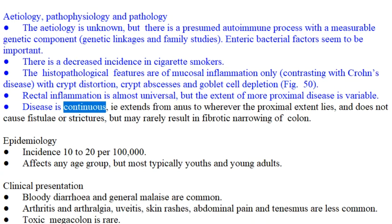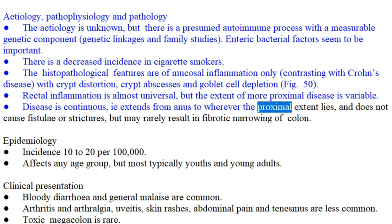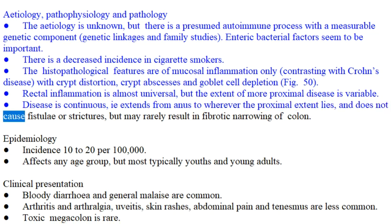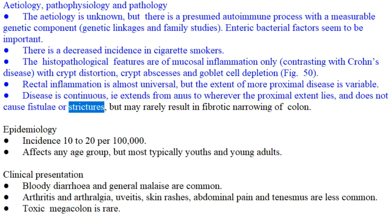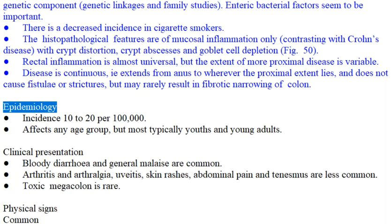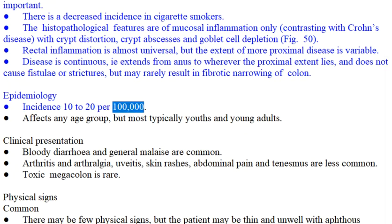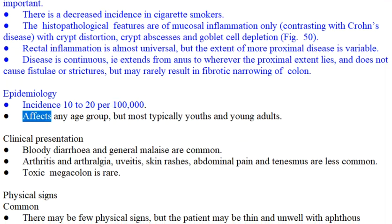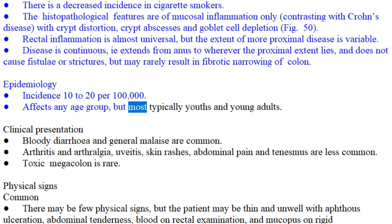Disease is continuous, i.e. extends from the anus to wherever the proximal extent lies, and does not cause fistulae or strictures, but may rarely result in fibrotic narrowing of the colon. Epidemiology: incidence is 10–20 per 100,000. It affects any age group, but most typically youths and young adults.